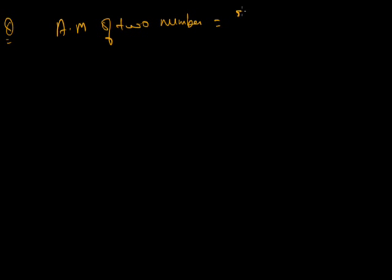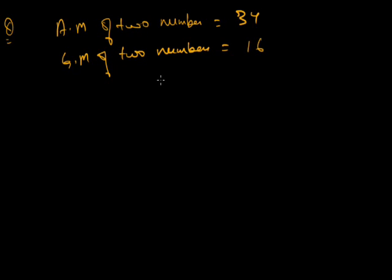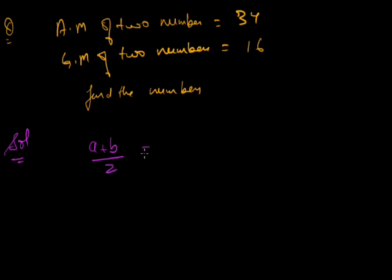Let's take a few more problems. Given the arithmetic mean (AM) of two numbers is 34 and the geometric mean (GM) of two numbers is 16. We need to find the numbers. Assuming the numbers are A and B, the AM gives (A + B)/2 = 34, so A + B = 68.